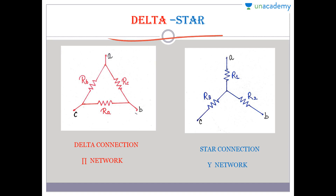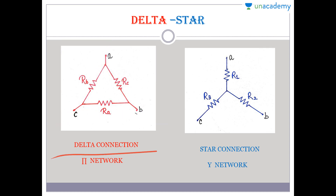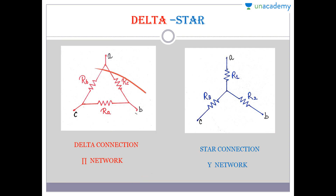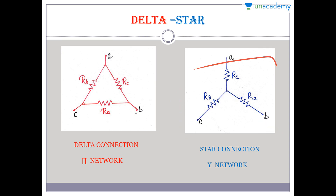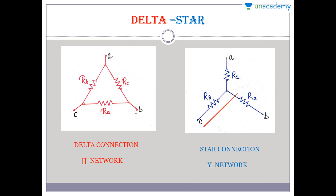They are asking to convert a delta structure into a star structure. First, let me explain what is a star connection and what is a delta connection. This closed connection is known as a delta connection, having three branches and three nodes. It is sometimes known as a pi network because splitting at any point gives a pi-shaped network. The other one is known as a star network — an open network having one central node and three branches, also known as a Y network.